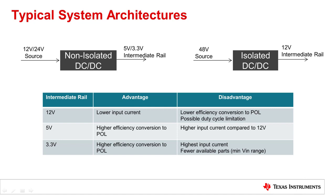Each intermediate rail option presents pros and cons. For example, the 5V range has fairly high efficiency conversion to the point of load, while its input current will be higher compared to the 12V range. The 12V range has a lower efficiency conversion to the point of load and possible duty cycle limitation due to the low conversion ratio — for example, from 12V to 1.2V. Also, 3.3V as an intermediate rail is valid because of high efficiency in conversion to the point of load, but it presents the highest input current and fewer available parts due to the minimum VIN range.